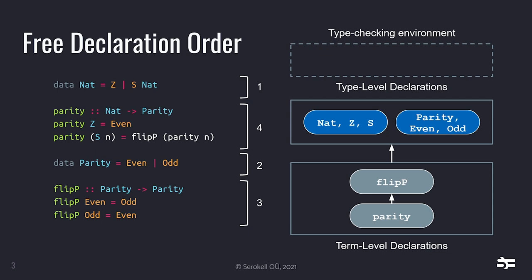So how does GHC handle things being in arbitrary order? Well, not really freely — in order to type check everything, GHC still needs to type check things in a specific order. For example, a parity function that calls flipP requires GHC to know what flipP is — it needs to know flipP's type.